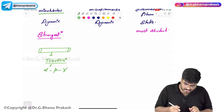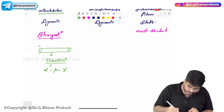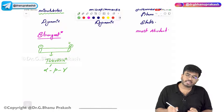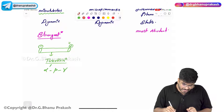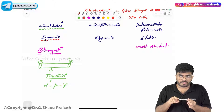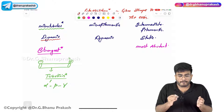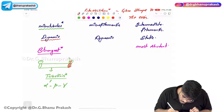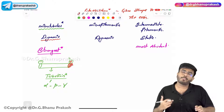Microtubules have two terminals — a positive terminal and a negative terminal. These are dynamic filaments, meaning they keep on growing. The end that grows by addition of tubulin molecules is called the positive terminal.